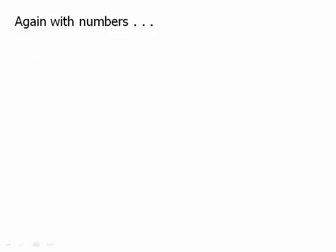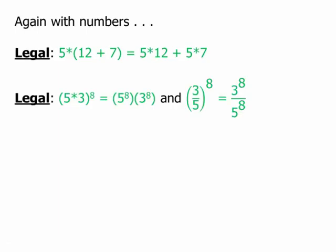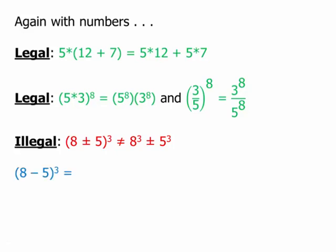Let's look at all this with numbers. Here is just the ordinary distributive law with numbers — multiplication distributing over addition. Here is the distributive law with powers — an exponent distributing over multiplication and division. But it would be illegal if we had (8 plus or minus 5) to the third. Let's take the subtraction case: (8 minus 5) to the third — well, that is 3 to the third, which is 27.